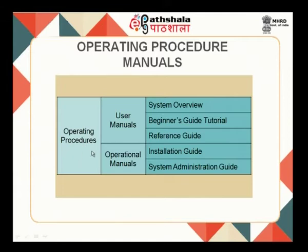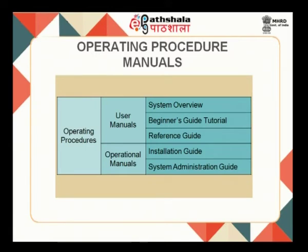Now we understand what operating procedures mean. As part of operating procedures, we basically need two things: a user manual and an operational manual. The user manual helps the user understand the overall view of the system, including a beginner's guide, tutorial, and reference guide. The operational manual includes a complete installation guide and system administration guide. When software is developed, users have one perspective of working on it and administrators have another, so everybody requires complete documentation on how they are supposed to operate, especially in cases of heavy risks.